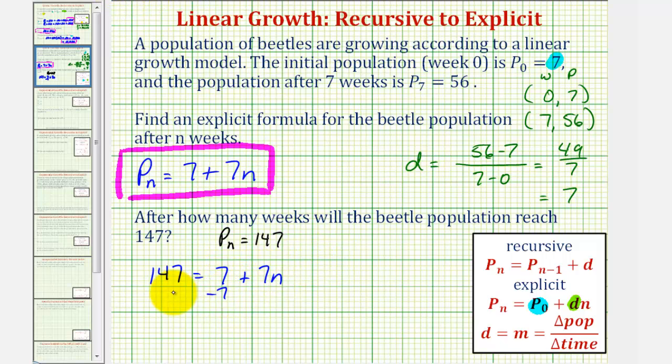Subtract 7 from both sides to get 140 = 7n. Now divide both sides by 7. 140 divided by 7 equals 20, so n = 20.